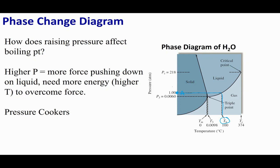If I increase the pressure to pressure B, I can find the new boiling point by going across and dropping down. What I see is that as I increase the pressure, the temperature at which the substance boils is going to be higher.